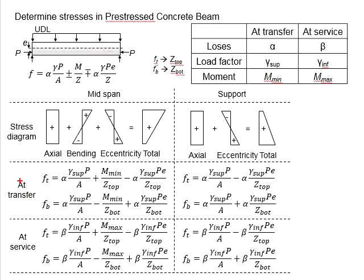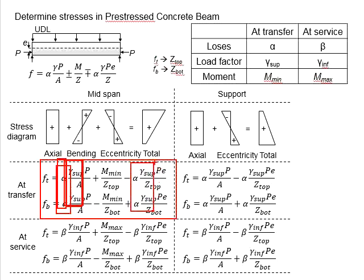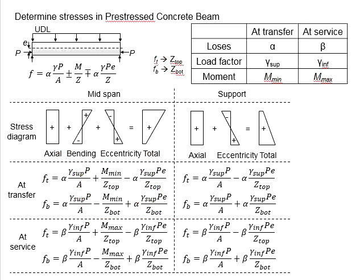We need to consider two stages, which is at transfer and at service. For the transfer stage, the factors and the moments are given here. This will lead to the equation here, consisting alpha and gamma superiors, which alpha and gamma superiors are always to be accompanied with the P. And the moment here will be the moment minimum.